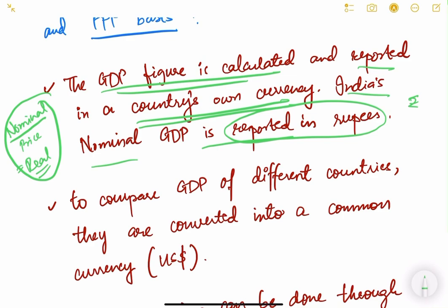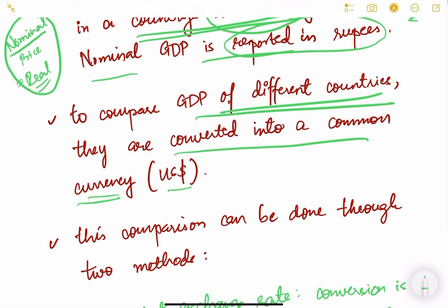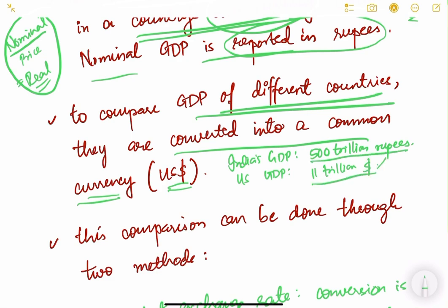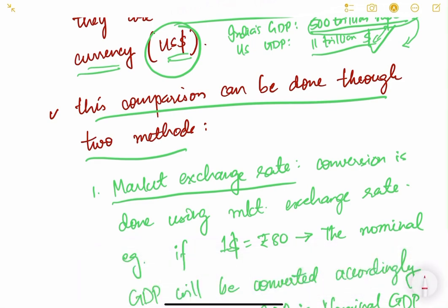For example, if India's GDP is 500 trillion rupees and the US GDP is 11 trillion dollars, we cannot compare them directly — we must convert rupees into dollars. This conversion can be done through two methods: the first is using the market exchange rate.